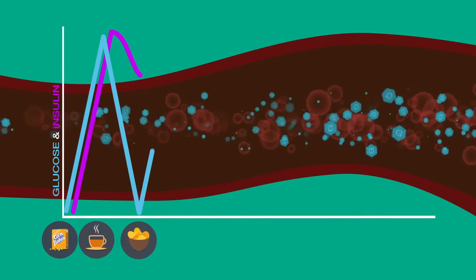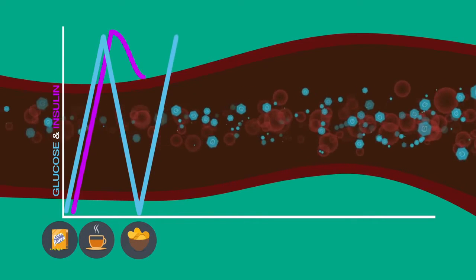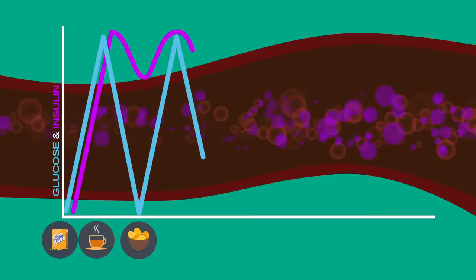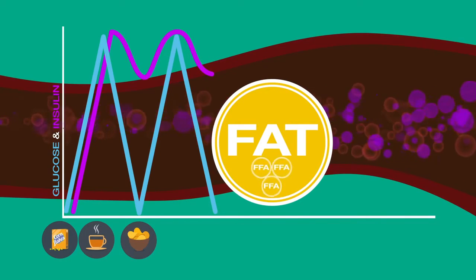Your glucose level then spikes right back up. Your body releases even more insulin. The doors open, the cells are once again fed, and excess glucose is put into your fat cells. With your insulin level remaining high, you're still not able to release any fatty acids. So you continue adding to the fat storage, but never taking any out.